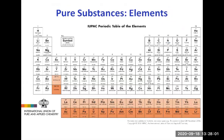Pure substances can be classified into compounds or elements. Elements are listed in the periodic table of elements — if you wonder whether something is an element, look it up in the periodic table. It lists all the elements that exist and have been discovered up to now.